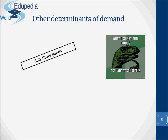Now let's talk about the other determinants of demand. In fact, price is not the only factor that determines how much of a good people will buy. Demand is also affected by the following. First, the number and price of substitute goods — that is, competitive goods. The higher the price of substitute goods, the higher will be the demand for the good, as people switch away from the substitute. For example, the demand for coffee will depend on the price of tea — if tea goes up in price, the demand for coffee will rise.